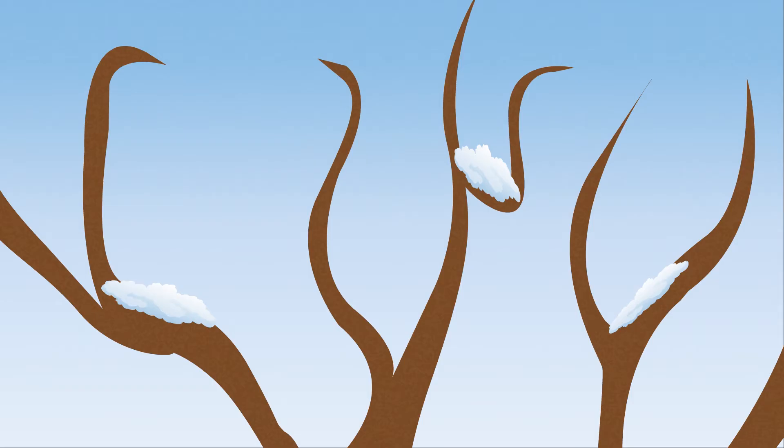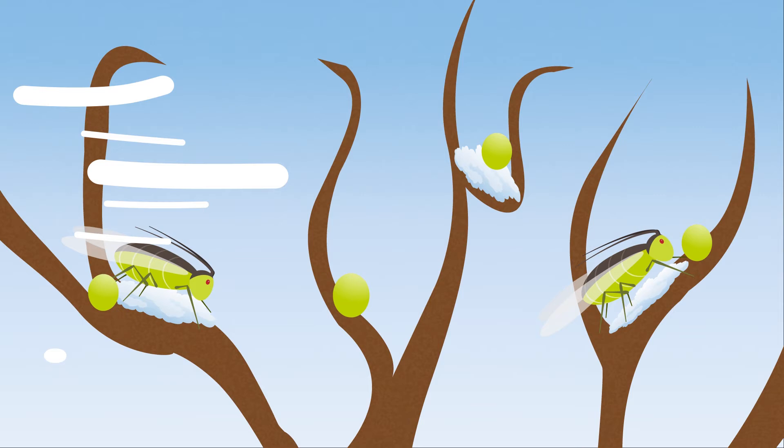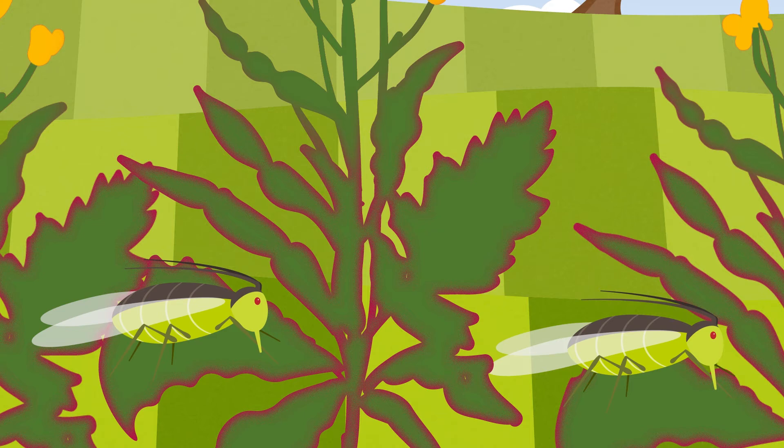If the autumn is harsh, the unwinged aphids die, while the winged aphids switch to their winter hosts to lay their eggs. The eggs are able to survive well in low temperatures. The aphids that hatch in spring are free of the virus and do not colonise the rapeseed stocks until late spring.